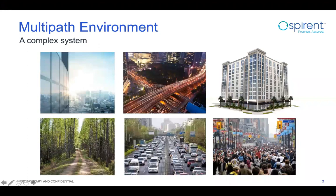As we all know, GNSS constellations are designed for open-sky use cases. All performance specs of GNSS signals in the ICDs are for signals received in an open-sky environment. Although this is a good starting point, the majority of GNSS users today are in environments where GNSS performance is not great, like the ones you see on the screen. And not all environments have the same effect or impact on the GNSS signals, further complicating the test scenario.